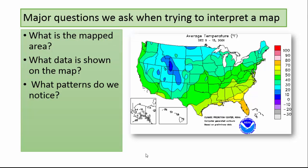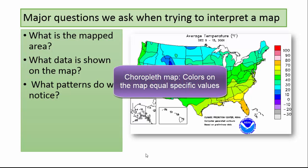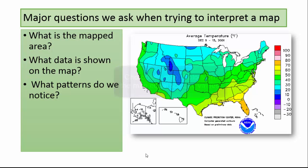The next thing we want to do is examine the patterns that we see on the map. In this case we are looking at a choropleth map, where colors on the map equal specific values. Let's identify the coldest areas on the map by looking at the legend to confirm that the blues and purples are the colors that relate to the coldest areas. The warmest areas are represented by reds and oranges, so they are down here.